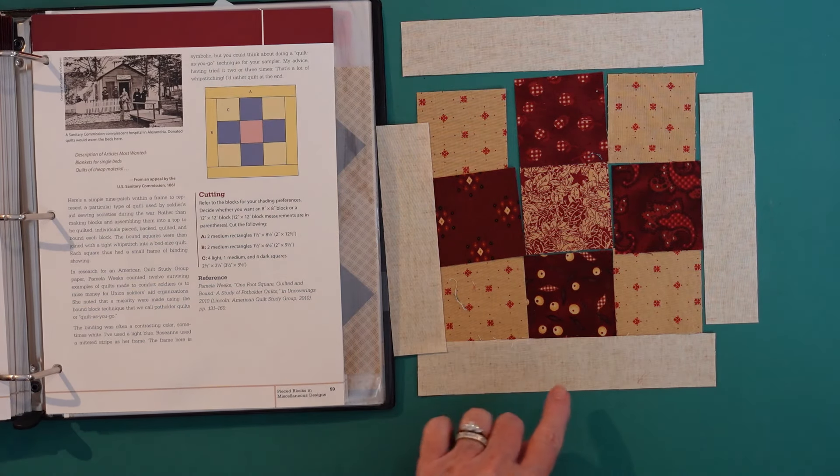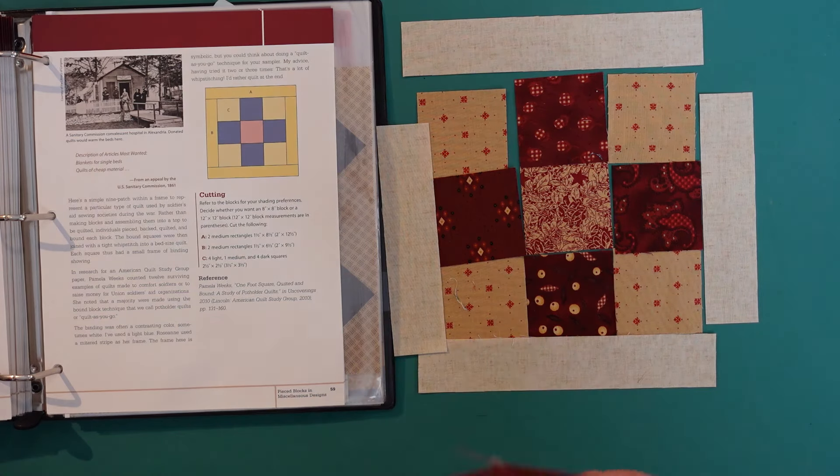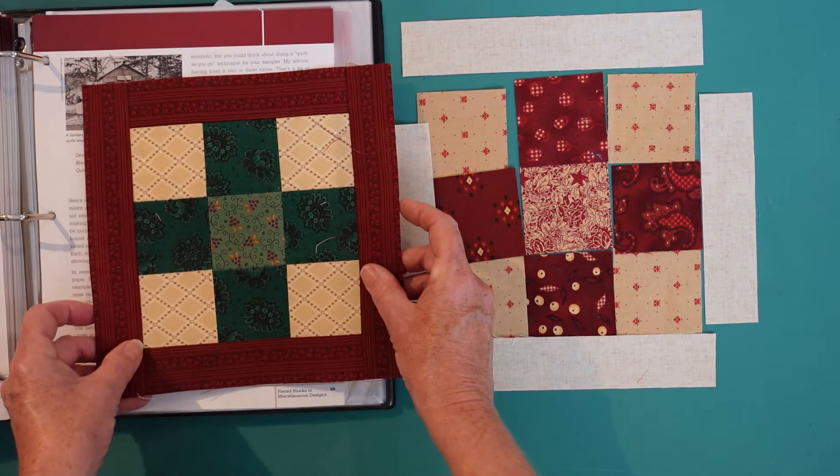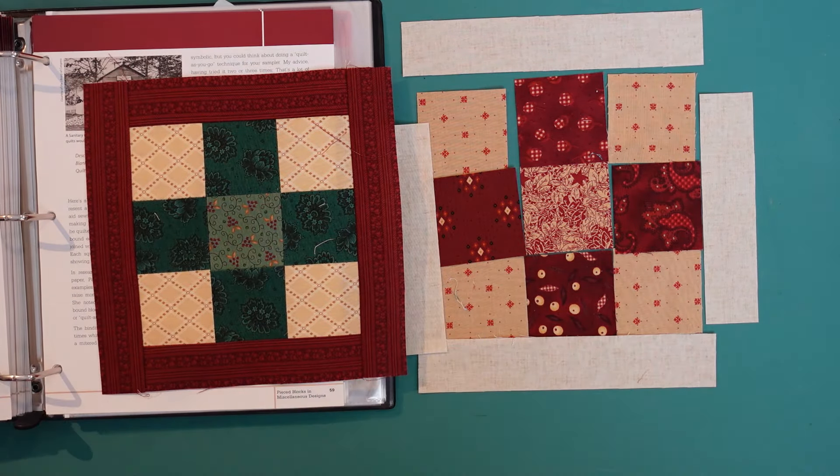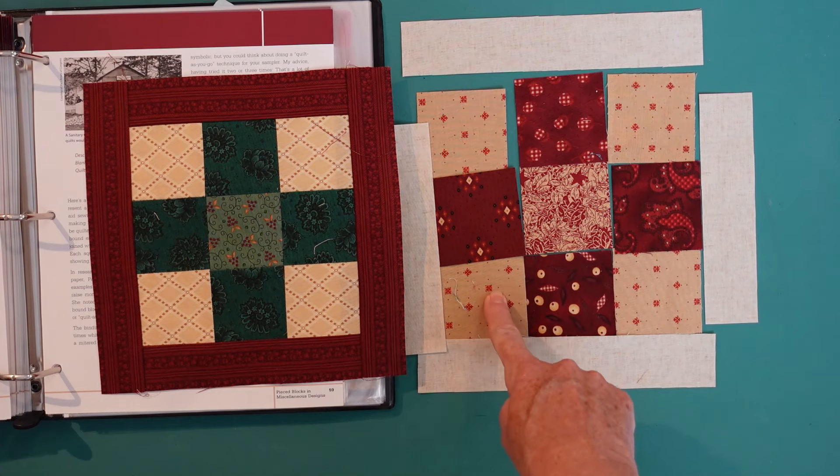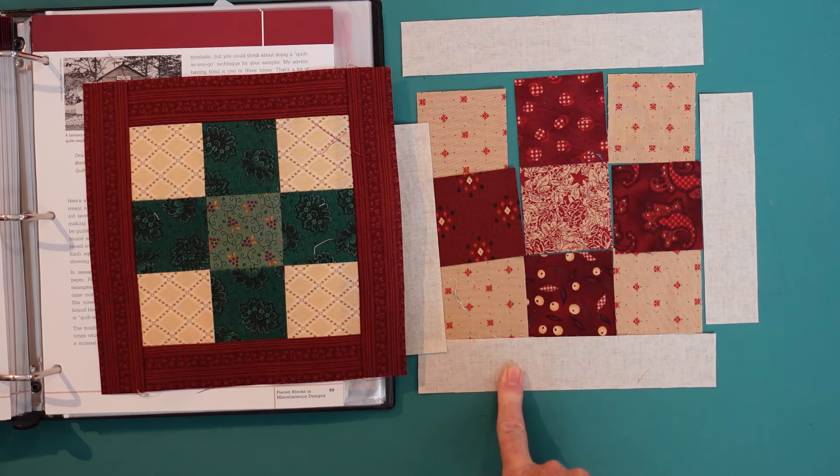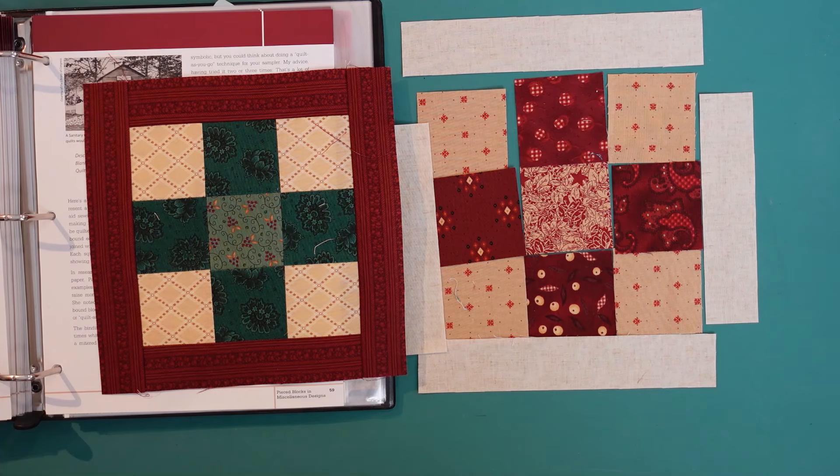This is the block that will be going into my red and tan quilt, and this is the block I've done for my multicolored block. Super easy, it really doesn't get much easier than that. Nice, even measurements of cut 2½, exactly the way they tell you in the book, and then cut 1½ for our outside border. So block number 28 will be very easy to assemble.